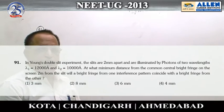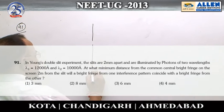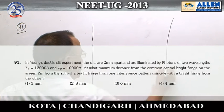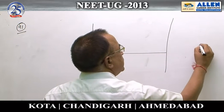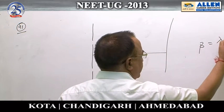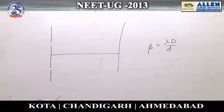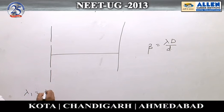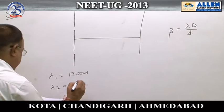Question number 91 is related to Young's double slit experiment. Here is my screen — the interference pattern we observe at the screen. The fringe width is λd/D. Here they are giving us two wavelengths: λ₁ = 12,000 Angstrom and λ₂ = 10,000 Angstrom.